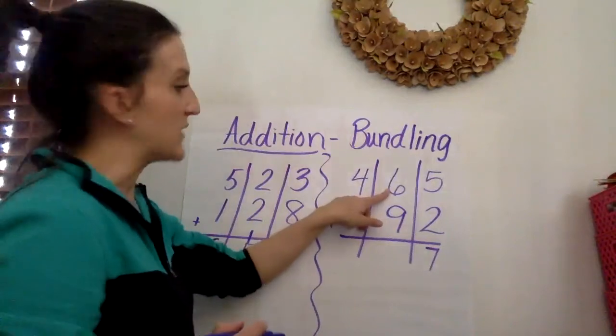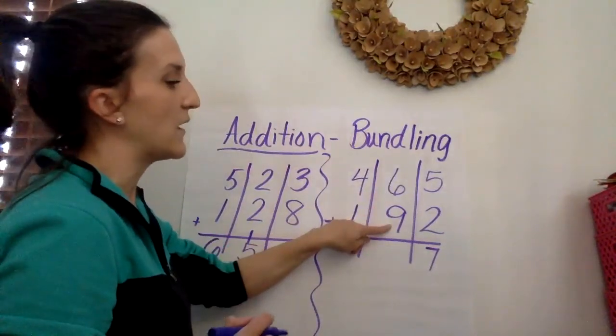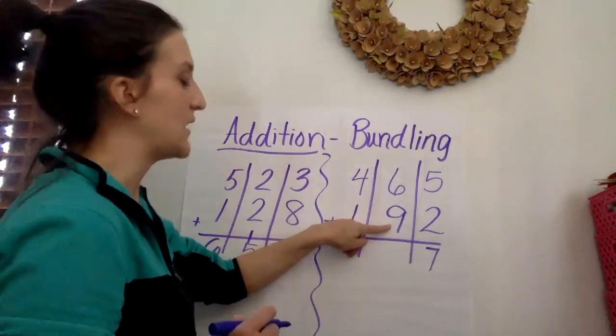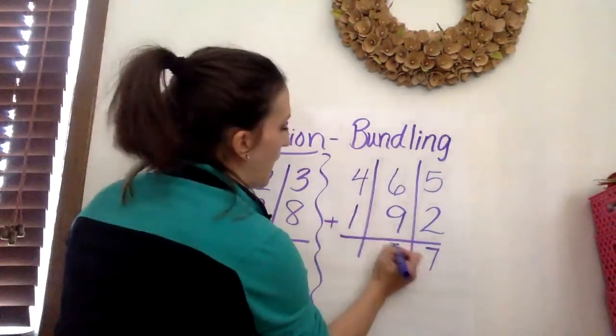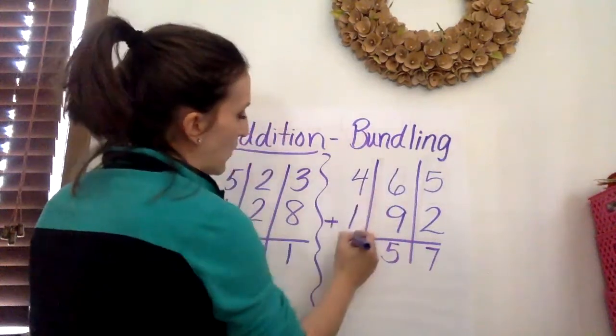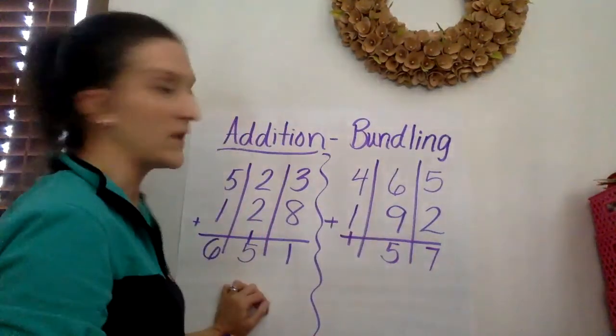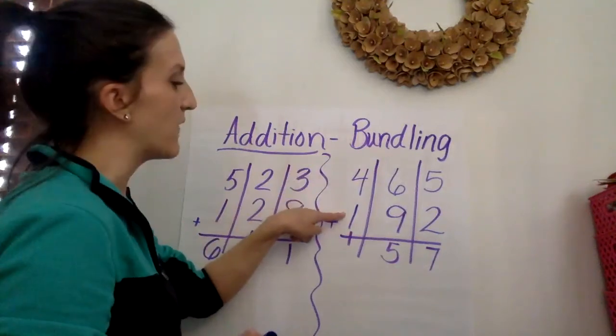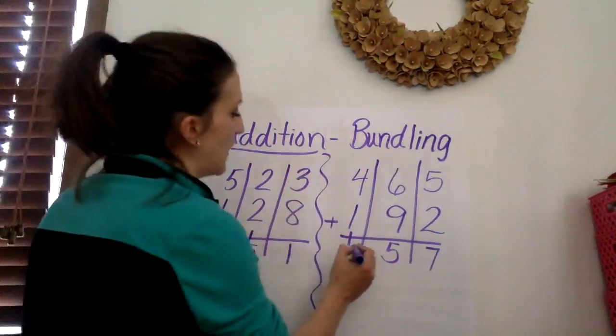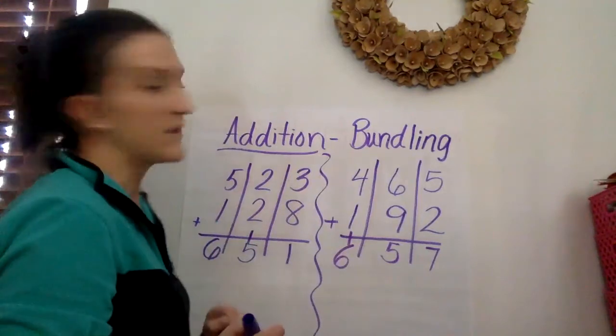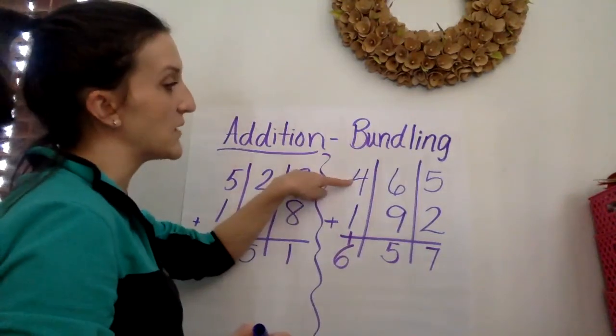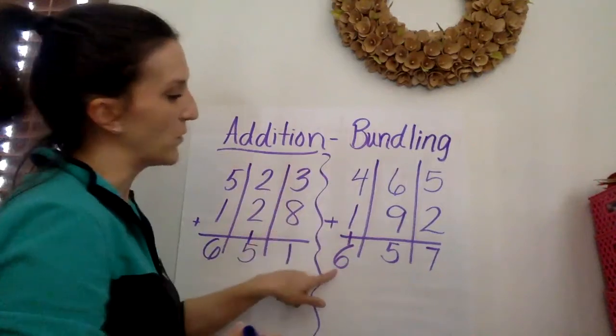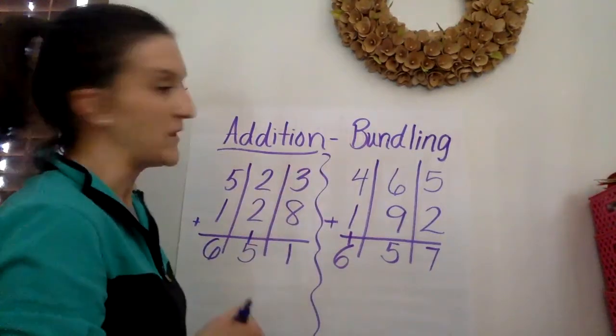Next in the tens place 6 plus 9. Can you tell me? It equals 15. 5 can stay. A group of 100 moves next door. Then 4 plus 1 equals 5 plus 1 equals 6. The sum of 465 plus 192 equals 657.